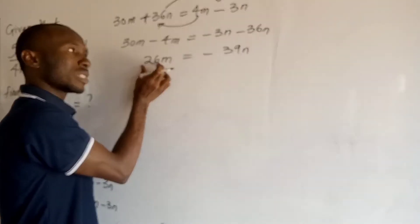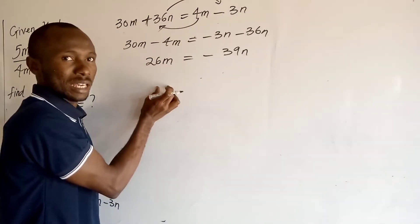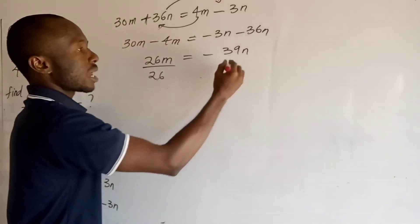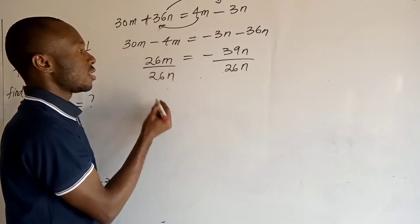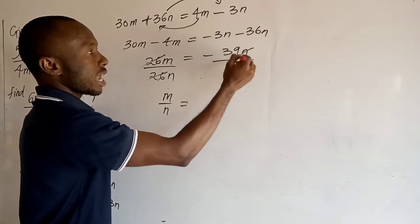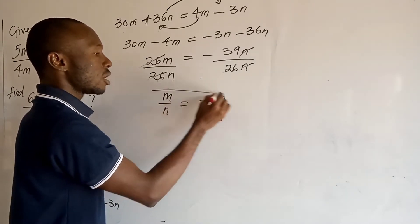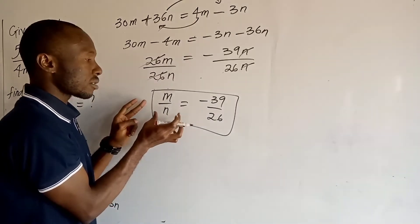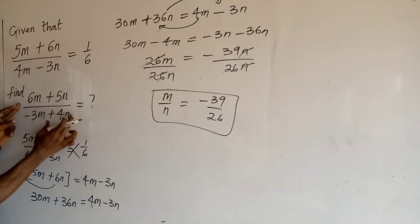Now I want to divide both sides by 26 and divide both sides by n, so I can get m upon n on the left-hand side of this equation. If I divide here by 26 and divide here by 26, and divide here by n and divide here by n, then this gives me m upon n equals minus 39 upon 26. So this is what I want to get from equation 1. With this ratio of m and n, I can find the value of this expression.